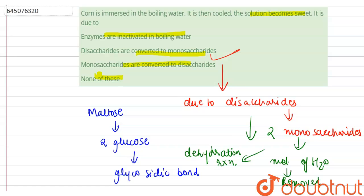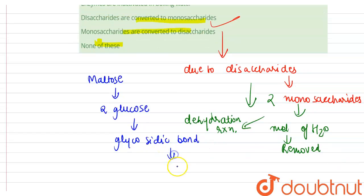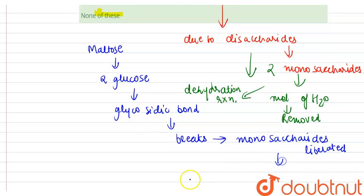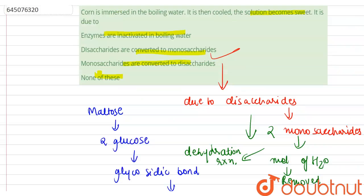When this glycosidic bond breaks, the monosaccharides are liberated and become free. Corn, after the boiling process, gets its sweetness just because of this process — which is why the correct option is disaccharides are converted to monosaccharides.